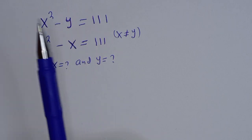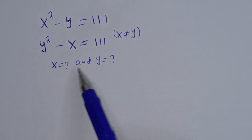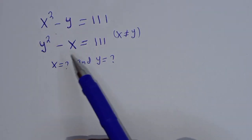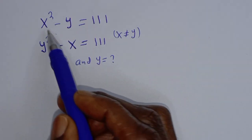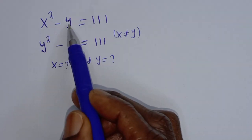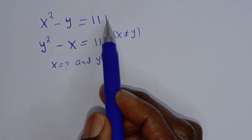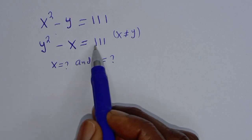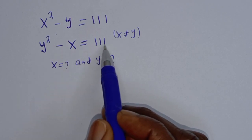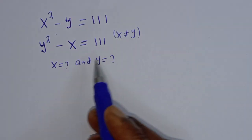Hello. How to solve for x and y from this given nice Math Olympiad problem. x squared minus y is equal to 111. y squared minus x is equal to 111. Provided x is not equal to y.